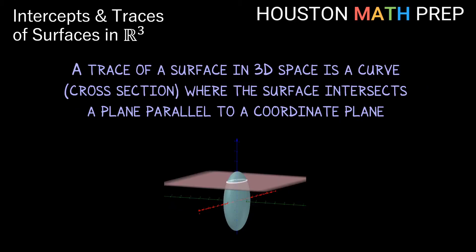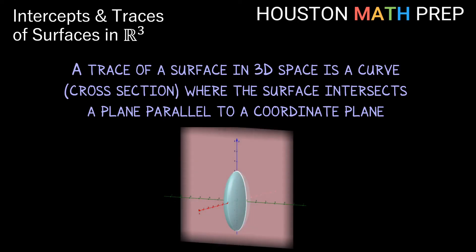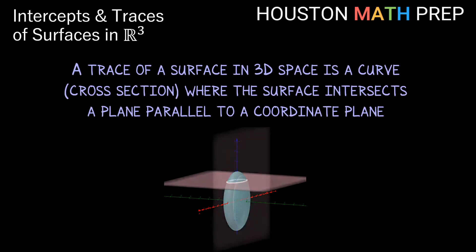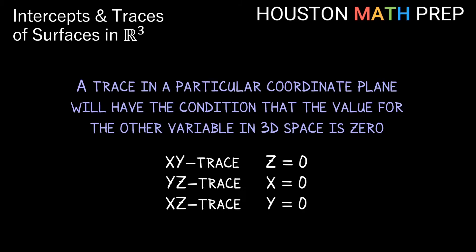Moving on to traces: a trace of a surface in 3D space is a curve — or what we sometimes call a cross-section — of the surface. This is where the surface intersects a particular plane, not an axis but a plane, with that plane either being a coordinate plane or parallel to a coordinate plane. When we talk about a trace in a coordinate plane, that trace will have the condition that the other variable not mentioned in the name of the coordinate plane is 0.